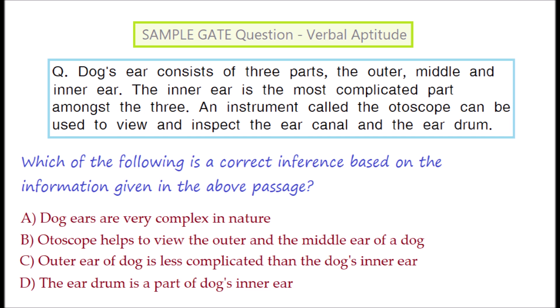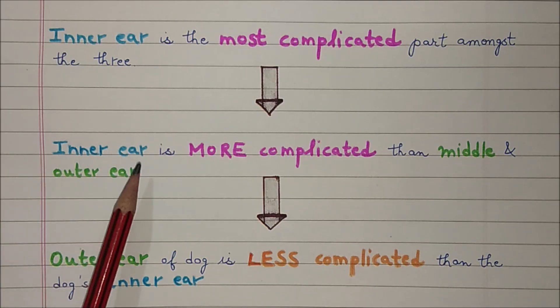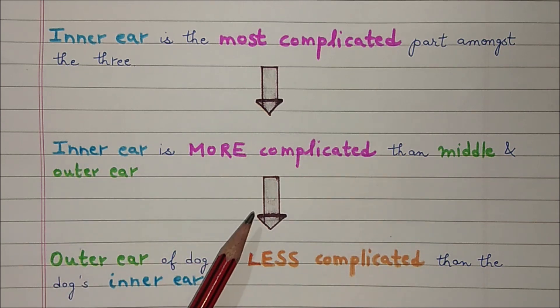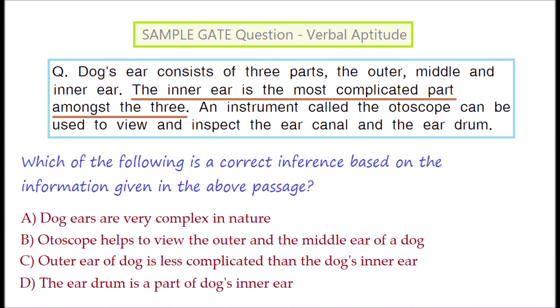Very easy answer. Paragraph mein likhha hai ki the inner ear is the most complicated part amongst the three. Matlab inner ear is more complicated than middle and outer ear. Toh yeh kaha ja sakta hai ki outer ear of dog is less complicated than the dog's inner ear. So, correct answer is option C.